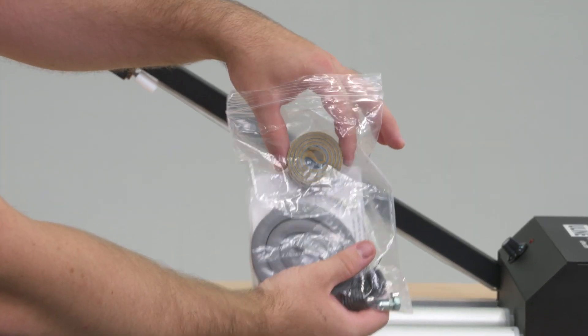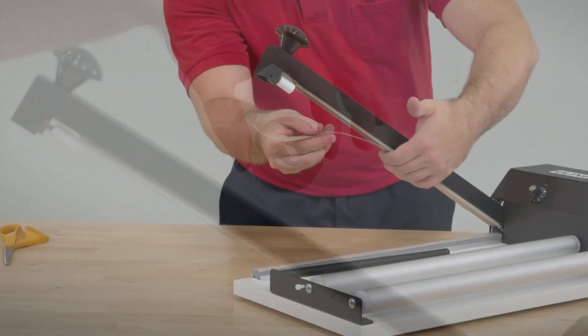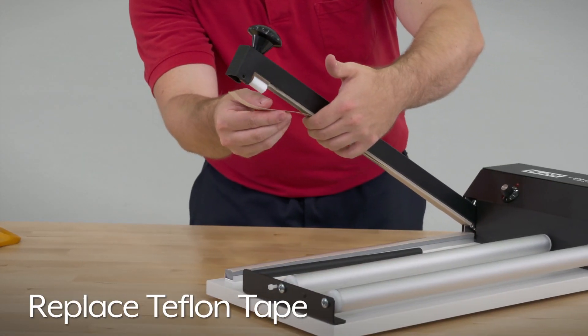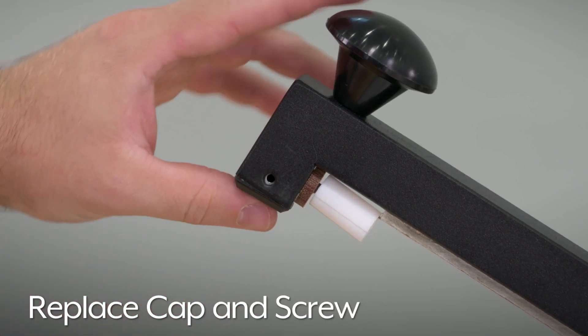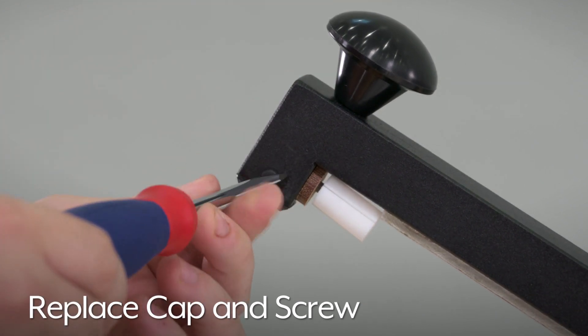If your application requires Teflon tape over the sealing wire, replace the Teflon tape. Now, replace the black plastic cap and replace the black plastic screw.